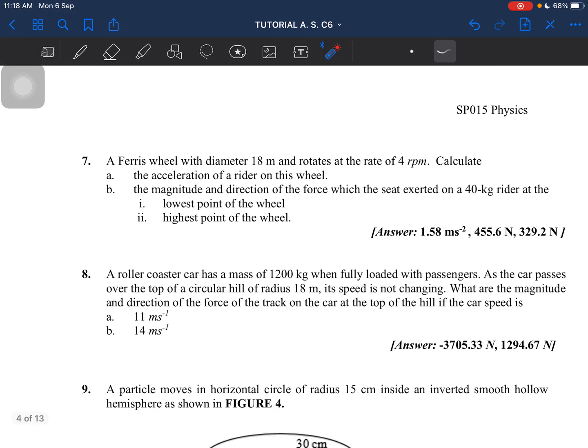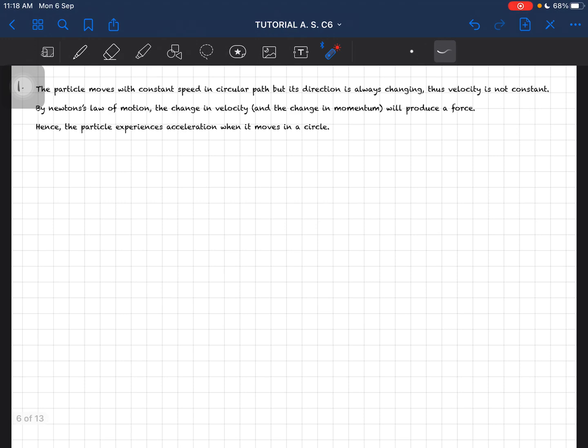I've written down the explanation. The reason the particle moves in a circular path even though it has constant speed is because the velocity is not constant. Why is the velocity not constant? It's because the direction of velocity is always changing. If we use Newton's law of motion, the change in velocity, which is the change in momentum, will produce a force.